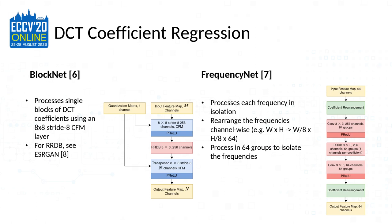The second approach is to process each frequency in isolation. We do that by rearranging the coefficients channel-wise — so it's one-eighth of the width and height, with 64 channels, each one being a single DCT coefficient. We then process that in 64 groups to keep the frequencies isolated from each other.